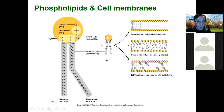The phosphate group is polar and the fatty acid groups are non-polar, so a phospholipid is both polar in the phosphate region and non-polar in the fatty acid region. This makes the molecule biphasic — it can dissolve in water because of the polar head and in lipids or fats because of the non-polar tails.